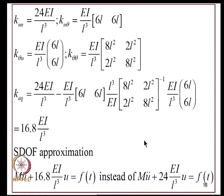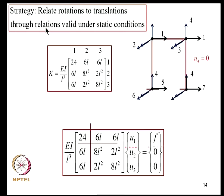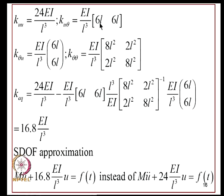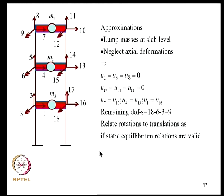Applying this to the portal frame, K_UU, K_U_theta, K_theta_U, and K_theta_theta are identified from the partitioned stiffness matrix. Computing K_equivalent gives 16.8 EI/L³. The single-DOF governing equation is M*U_ddot + 16.8(EI/L³)*U = F. This model includes joint rotations and therefore has a lower stiffness than the simpler model which ignored joint rotations and gave 24 EI/L³.